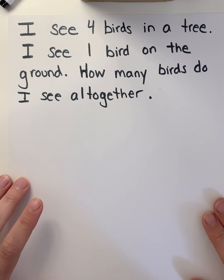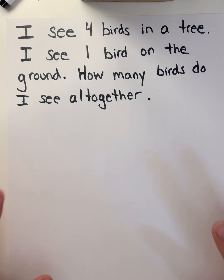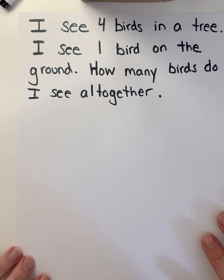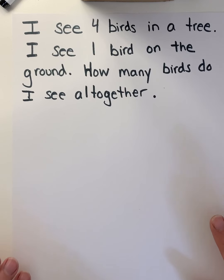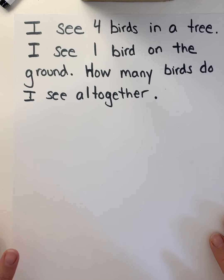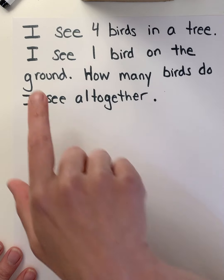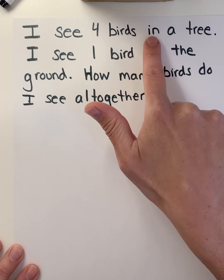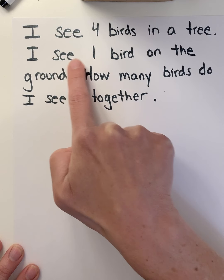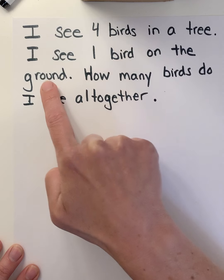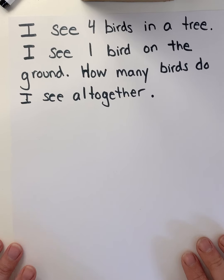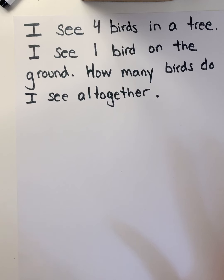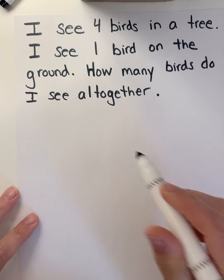I have a little story problem and I'm going to read it to you, then I'm going to draw a picture to help me solve it, because every story problem has a question at the end that you need to figure out. It says: I see four birds in a tree. I see one bird on the ground. How many birds do I see all together? So I know I have birds, some are in a tree and some are on the ground, and I need to find out how many birds I have all together.